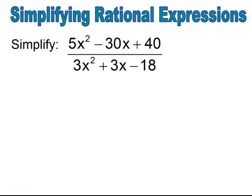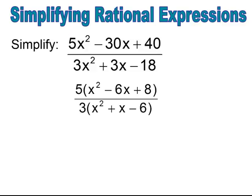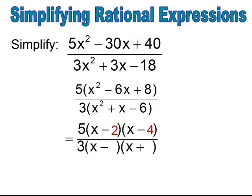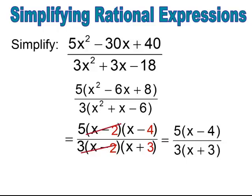Pause and try. I factor out the GCF and get 5 times x squared minus 6x plus 8, and in the denominator 3 times x squared plus x minus 6. Then I factor the numerator and denominator, simplify, and the x minus 2 cancels. I'm left with 5 times x minus 4 all over 3 times x plus 3.